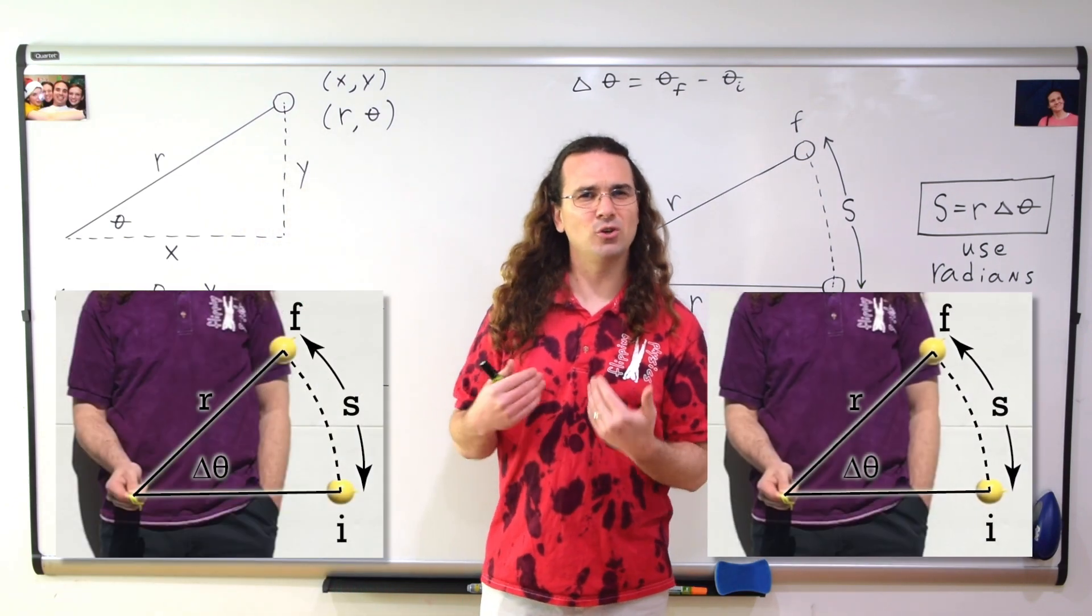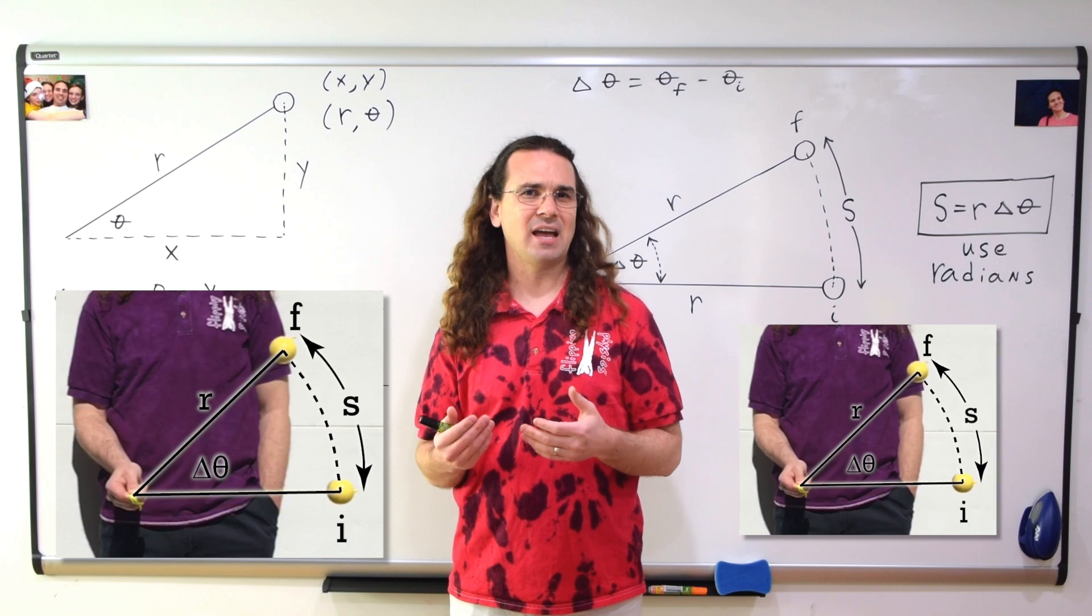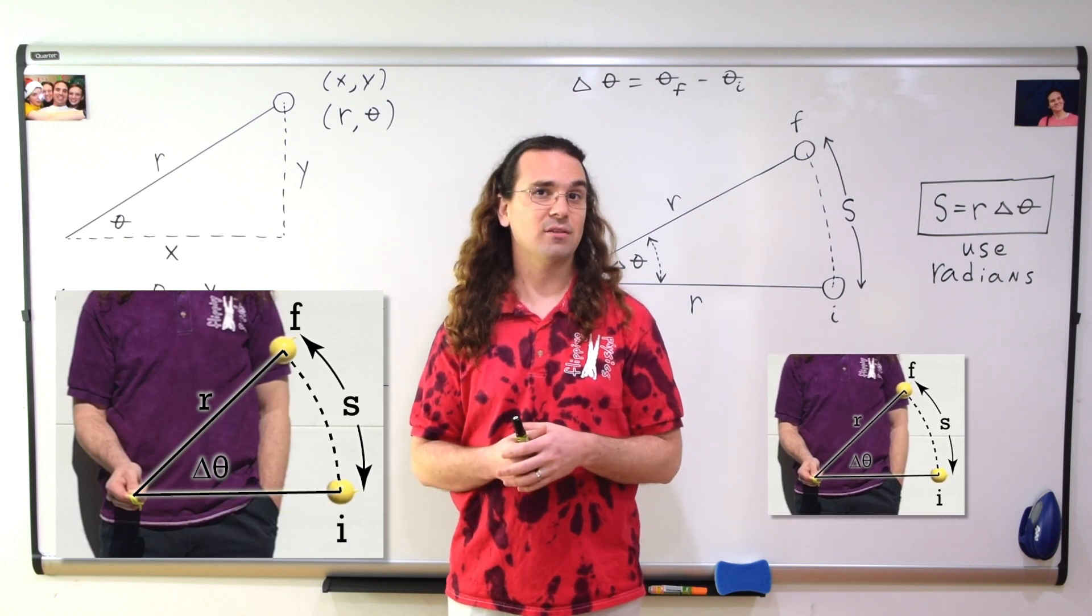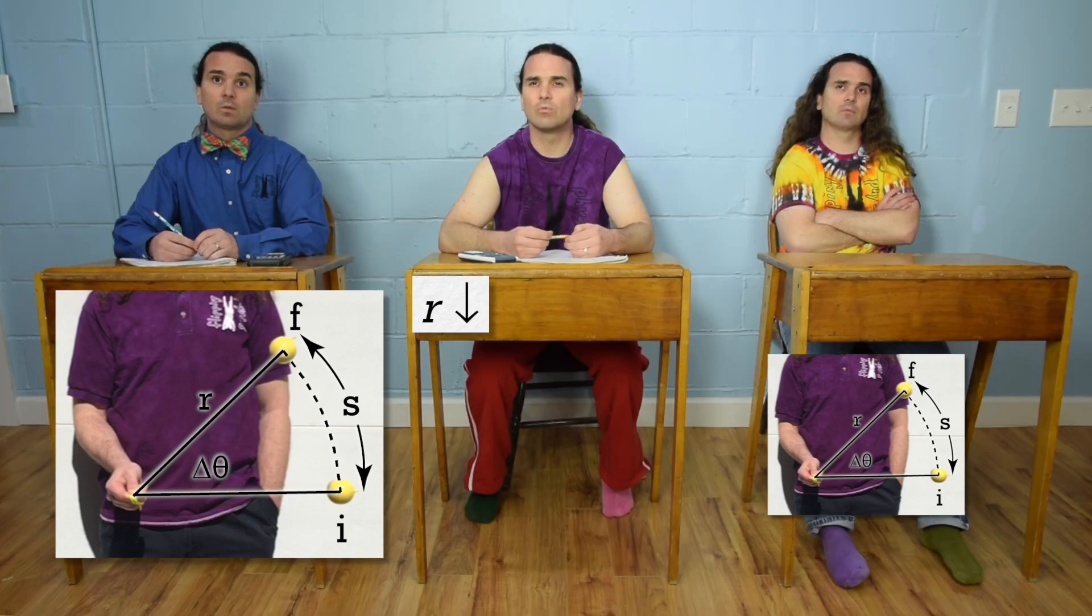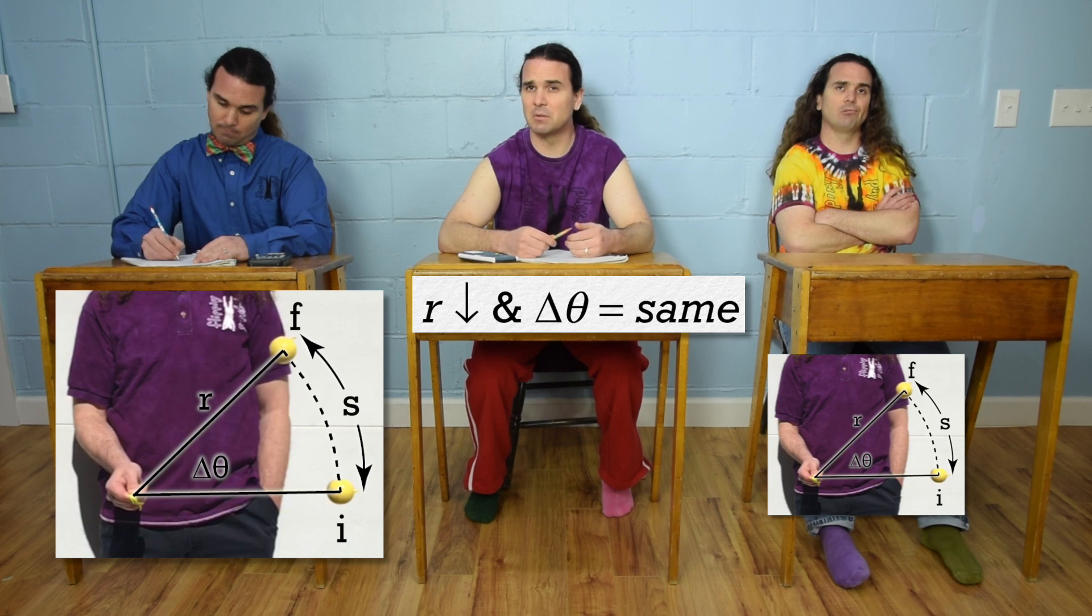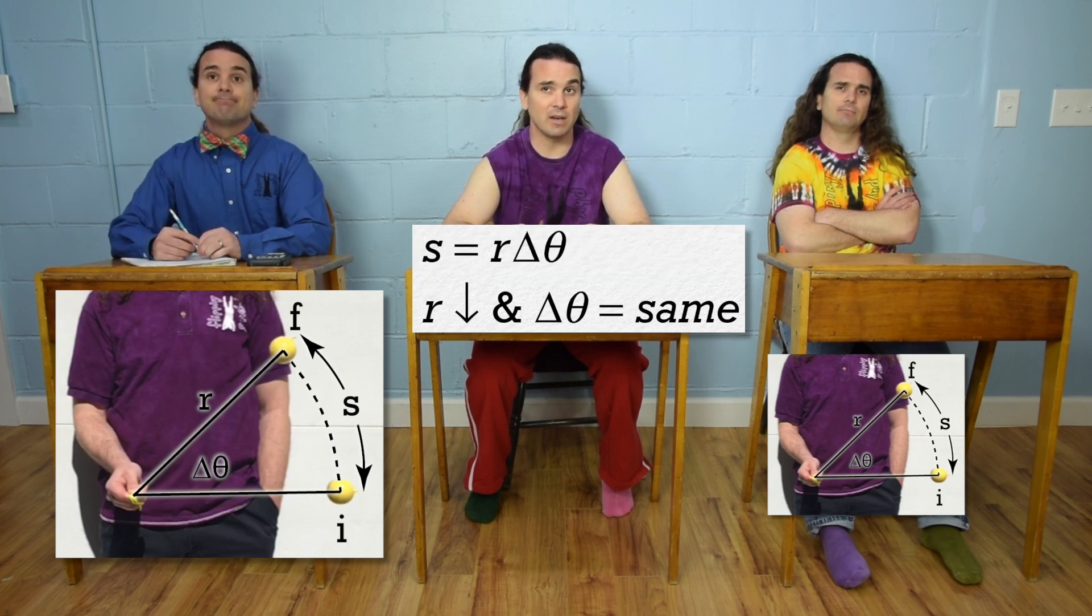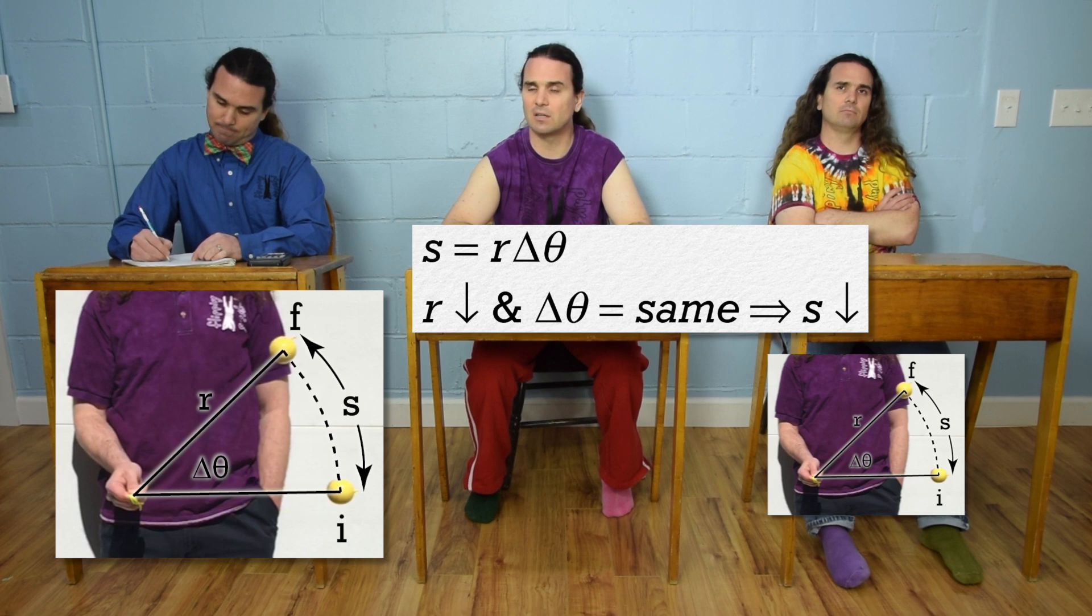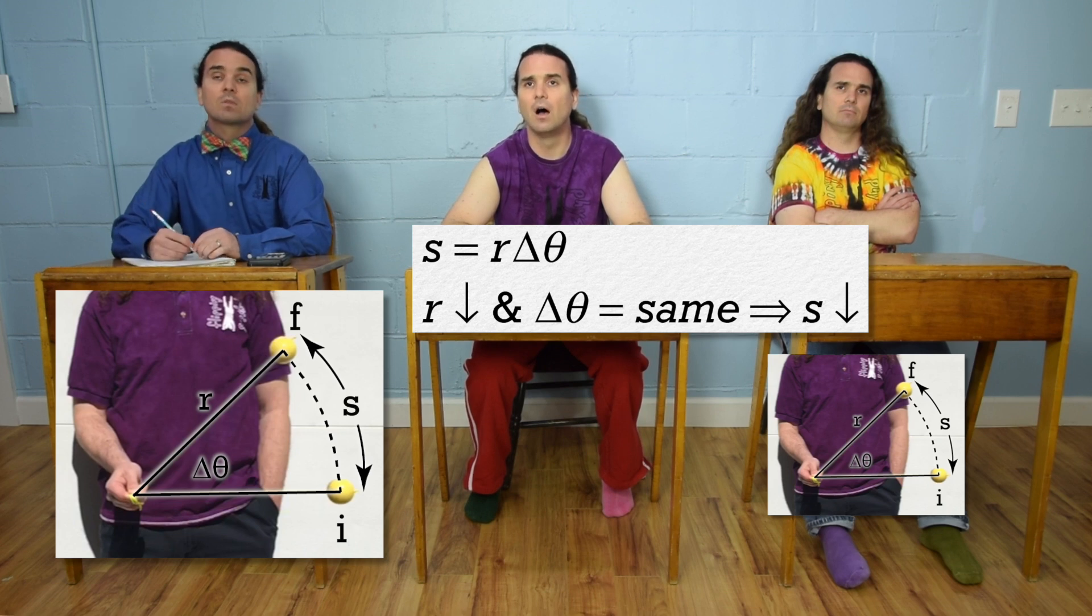Okay, Bobby, if we reduce the radius of the string attached to the sphere, what happens to s, the arc length traveled by the sphere? The radius is made smaller. So, if the angular displacement stays the same, then because the arc length equals the radius times the angular displacement, then the arc length must be reduced, because s equals r delta theta. That is correct. A smaller radius means a smaller arc length.